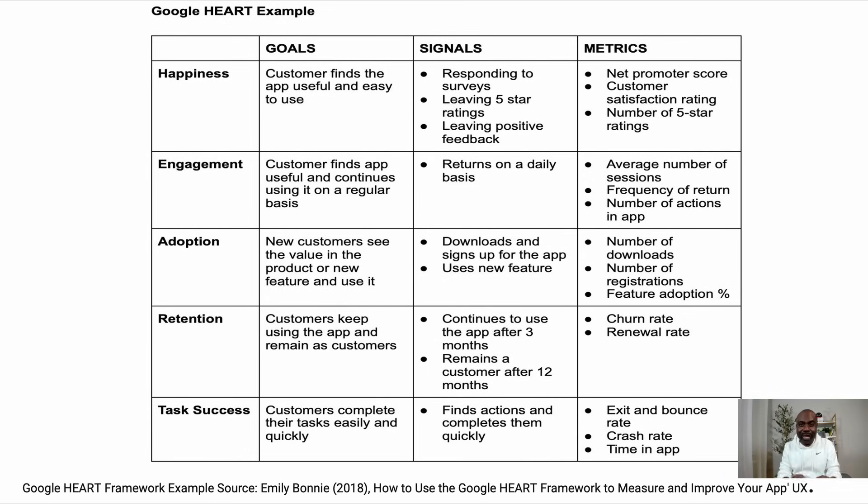For Task Success, the question is whether customers are completing the task. Ways to measure this include bounce rate, exit rate, time-on-task, and crash rate. This is the heart of the Google HEART framework, and it is purely product-focused — you don't see much about revenue or financial metrics here. Whether you're a salesperson, working in a bank, or offering a service, you can still apply this framework by thinking of your service as a product. However, since this framework misses revenue, I'll now discuss a second framework that brings in financial metrics.